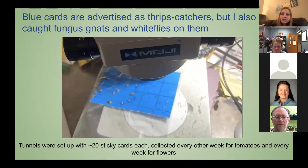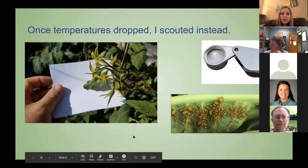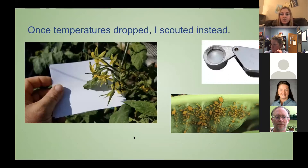For the blue sticky cards, they're usually advertised as thrips catchers, but we also got fungus gnats and whiteflies on these cards too, and I even caught some aphids on the blue sticky cards. We had about 20 sticky cards per tunnel, so for farms with two tunnels, that was 40 cards per farm. I collected them every other week for tomatoes and every single week for flowers, replacing them each time with a brand new card.